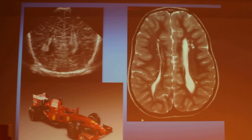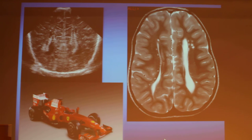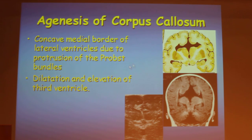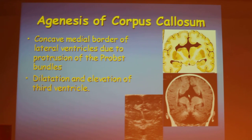This is also called the motor rally or race car sign — a typical sign for agenesis of corpus callosum. On coronal images, there is upward elevation of the third ventricle with the frontal horns pointing laterally.